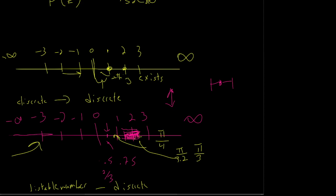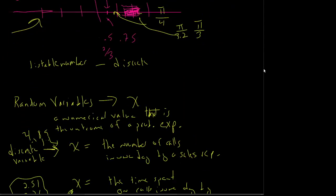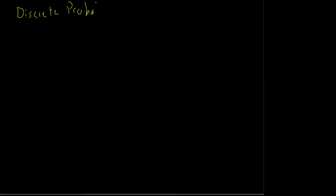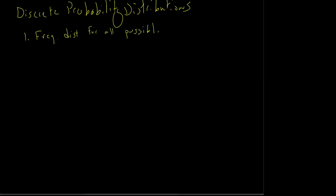We're going to focus on discrete random variables and let them make discrete probability distributions. To do this, we make a frequency distribution for all possible outcomes. Remember how the frequency distribution — the f over n from descriptive statistics — would come back? Well, here we're going to look at it from a probabilistic range, and later on we'll look at what we can infer from it.